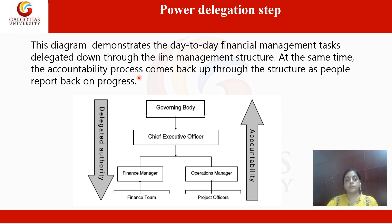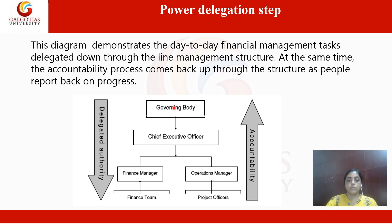You can also see this content in the slides. This diagram demonstrates the day-to-day function management task delegated down to the line management structure. At the same time, the accountability process comes back up the structure as people report back on progress. So when accountability is present it flows from lower to upper, and when distribution of power occurs it flows from upper to lower.